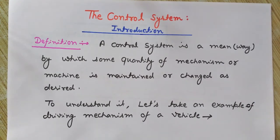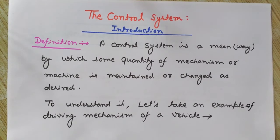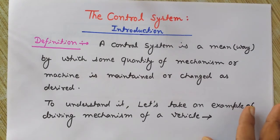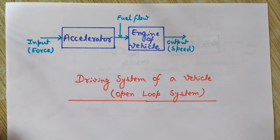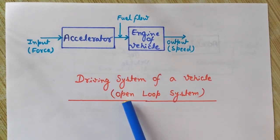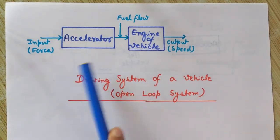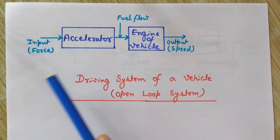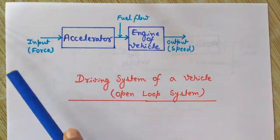We use a feedback system to change the parameters. To understand this, let's take an example of the driving mechanism of a vehicle. This is the driving system of a vehicle — it is an open loop system. Let's understand it with the help of this example.